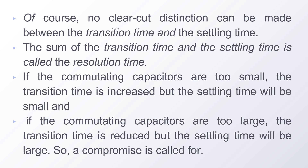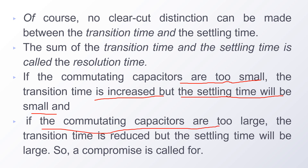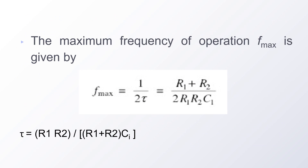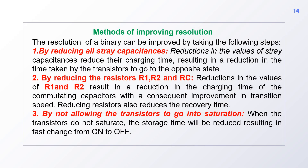If the commutating capacitors are too small, the transition time is increased but the settling time will be small. If the commutating capacitors are too large, the transition time is reduced but the settling time will be large. So a compromise is called for. The frequency depends on R1, R2, and the input capacitance CI — which is an undesired stray capacitance. To increase speed of operation: decrease the stray capacitance, decrease R1 and R2 values, or do not allow the transistor to go into saturation. When the transistor does not saturate, the storage time is reduced, resulting in a fast change from ON to OFF.